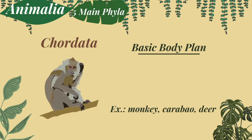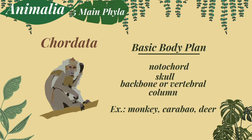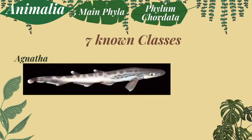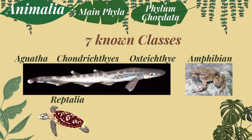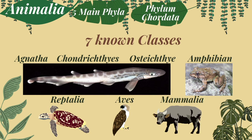The last phylum is chordata. Species in chordata have a notochord, skull, and backbone or vertebral column, which is the reason why it falls under vertebrates. There are seven known classes under chordata: the class Agnatha, Chondrichthyes, Osteichthyes, Amphibia, Reptilia, Aves, and Mammalia.